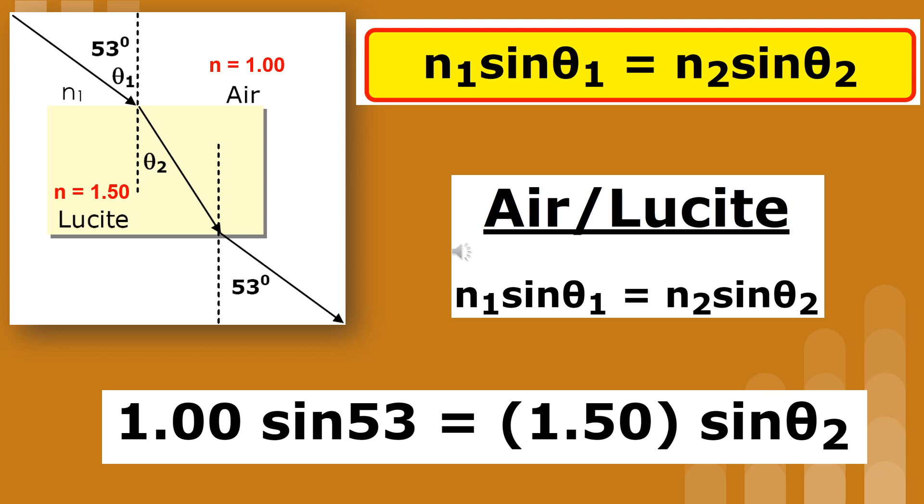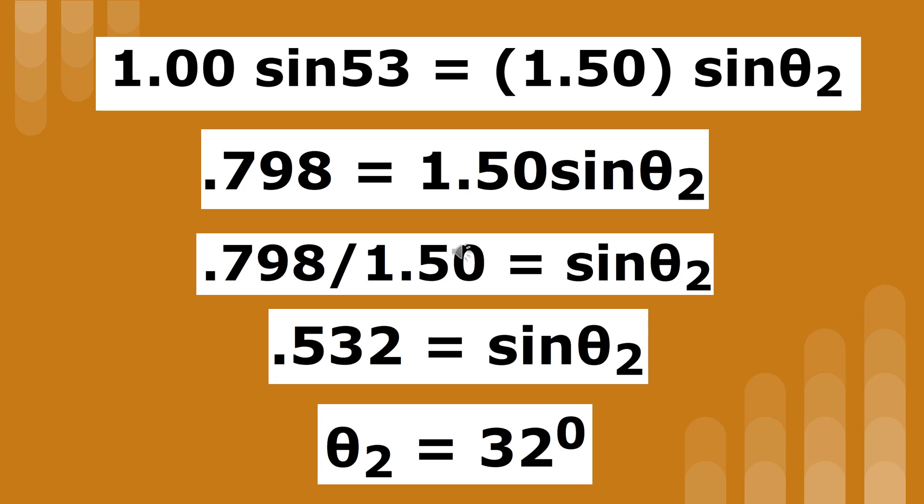So when we substitute, we get 1 sine 53 equals 1.5 sine theta 2. Once you've substituted the info from the problem, you have to isolate the unknown angle. In the last step, you enter 0.532 and press inverse sine to get the angle.